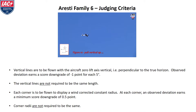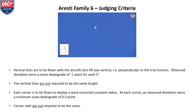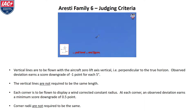Figure ten, pull vertical up. Two-point roll on the up. Canopy down, tail slide. Two-point roll on the down. Pull level.